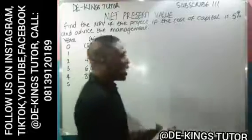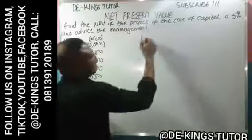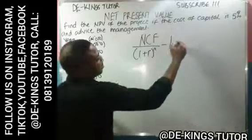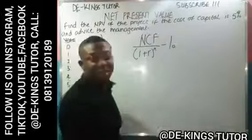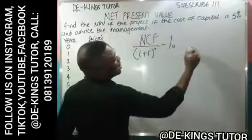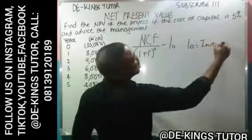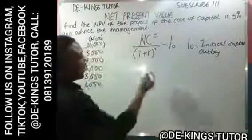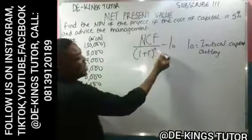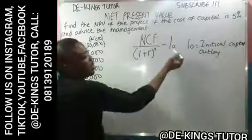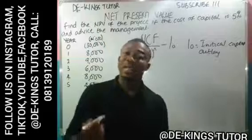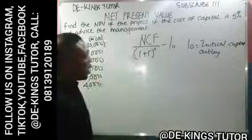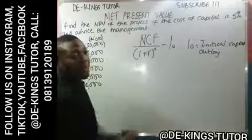Before we proceed to the question, I noticed I omitted something in the formula. The actual formula is: net cash flow divided by (1 + R) raised to the power N, minus IO. IO means initial capital outlay — that is, their cost, the money used to finance the project. So the complete NPV formula is: net cash flow divided by (1 + R)^N, minus IO.